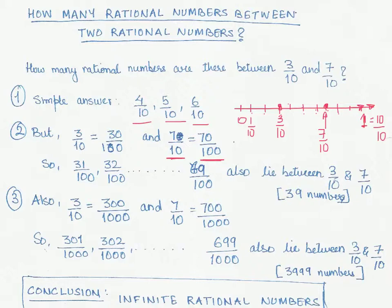If you look at it, what has happened over here is that we have actually divided this distance between 0 to 1 in 100 parts instead of 10 parts. And therefore we have now more choice of numbers, which means I have to find out the rational numbers between 30 by 100 and 70 by 100.